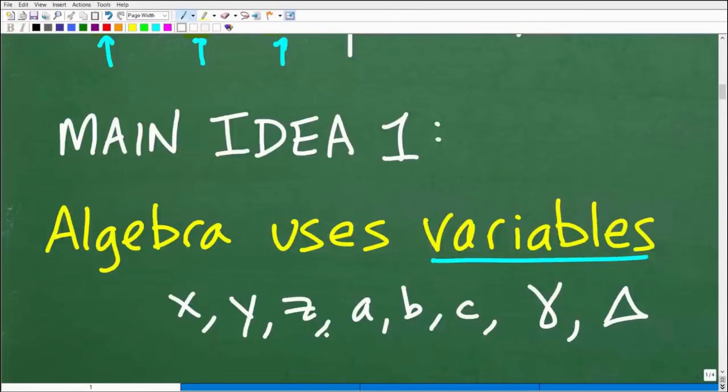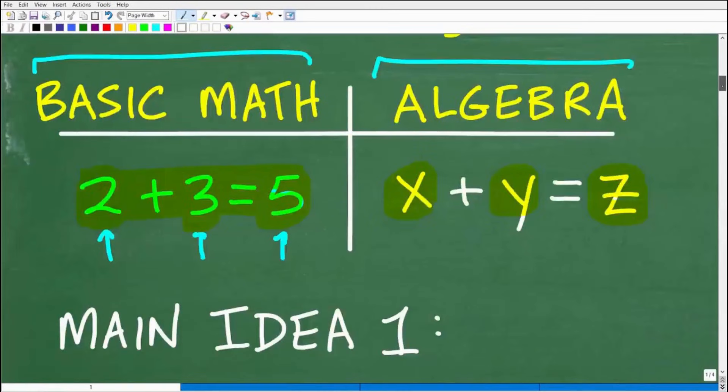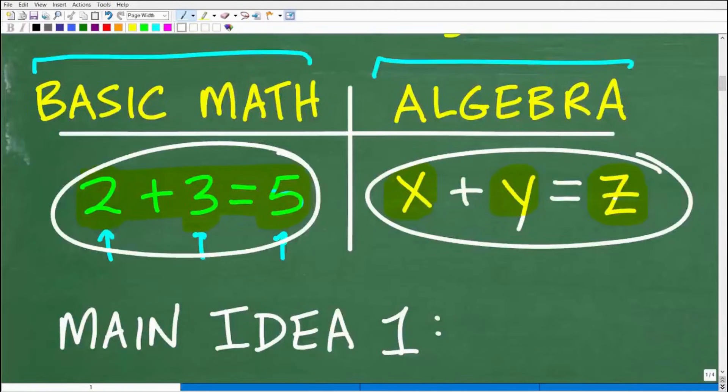So that's the first main idea, and that's probably the biggest, most obvious difference from basic math. In basic math, we use numbers to represent numbers. In algebra, we use variables to represent numbers.